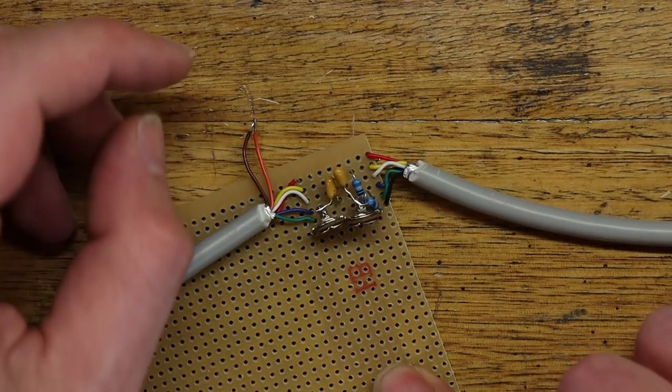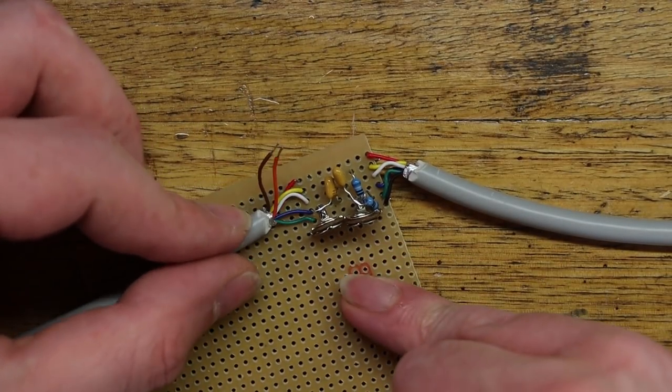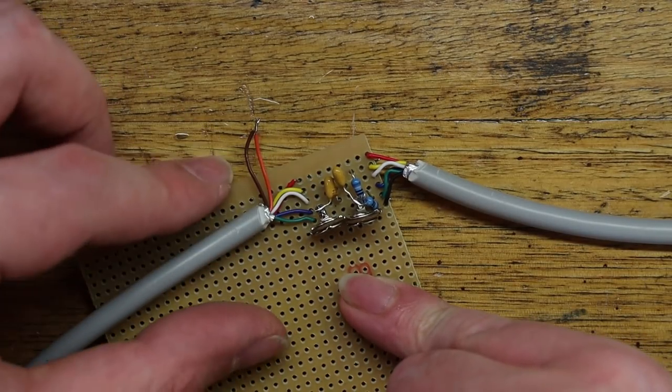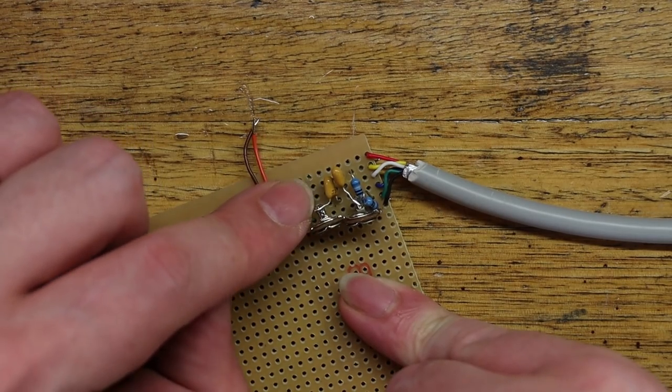Right, so I've soldered them all in except for the orange and brown and the reason they were left long is they also need to go to the five volt line which as we know is our top row, so to make life a little easier because they have to reach a little further I kept them longer.